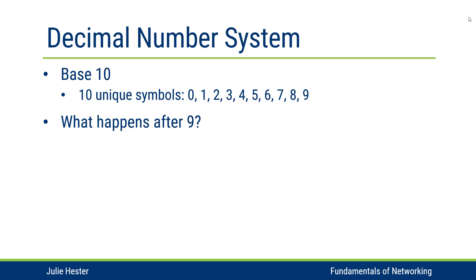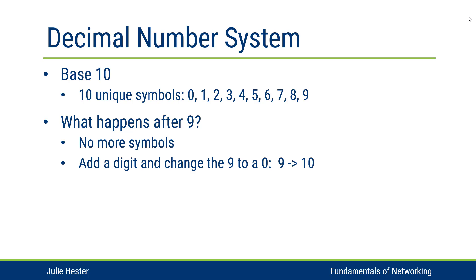Let's start by reviewing the decimal number system and how it works. The decimal number system is also called the base 10 system because it has 10 unique symbols, zero through nine. We don't really think about what happens when we're counting, but what do we do when we get to number nine and want to count? We don't have any more symbols, so we add a digit in front of the nine, or add a new place value, and the nine becomes a zero — so nine becomes one zero, or what we refer to as 10.